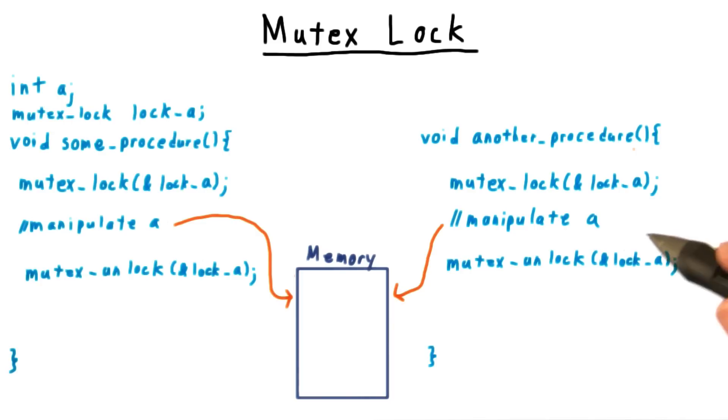In this way, the threads are able to mutually exclude each other from using resources. Hence, these are called mutex locks.